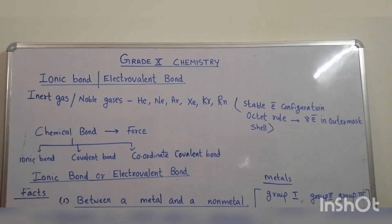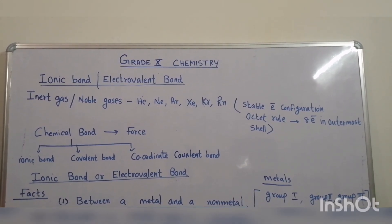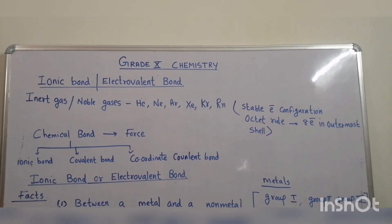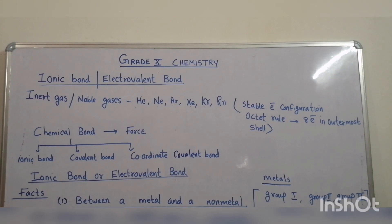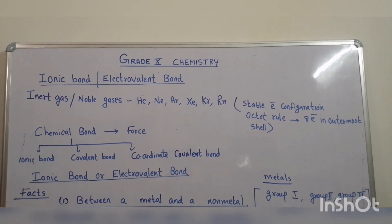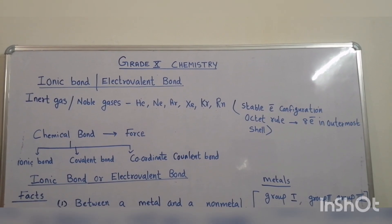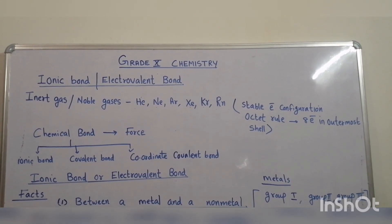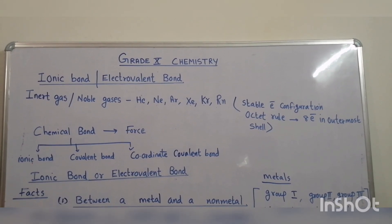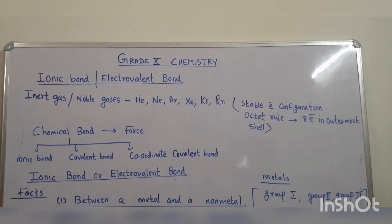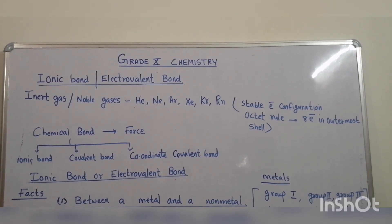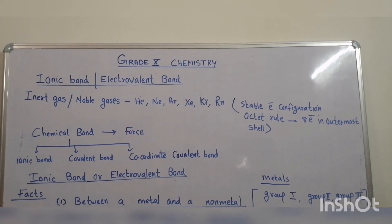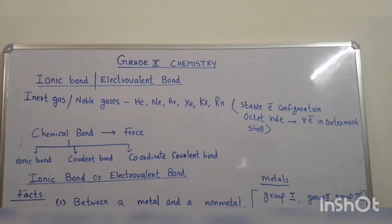Helium has only 2 electrons — it has a completely filled K-shell. These elements obey the octet rule: 8 electrons in the outermost shell. All other elements take part in chemical bonding to attain 8 electrons in the outermost shell. This is by chemical bonding.